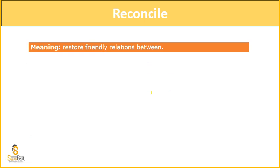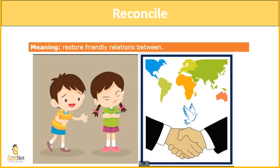Our next word is 'reconcile.' Reconcile means to restore a friendly relationship between people. If there are two people who have fought against each other and they are trying to mend their bond, that is called reconciliation. For example, India and Pakistan are always at war — if they just forget about their differences and try to mend their bonds and be better, then we can say these two nations have reconciled their relationship. Reconciliation means to bring two people to harmony — to agree. Harmonize.